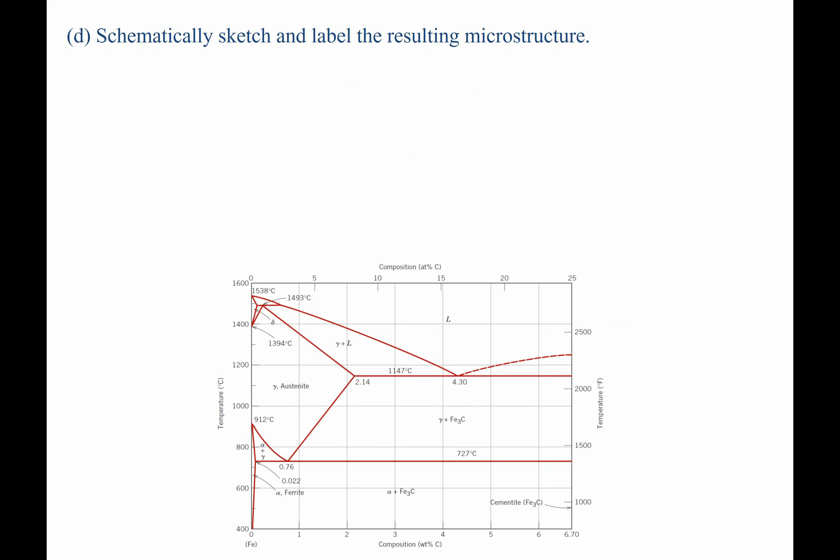For part D, it then asks us to sketch and label the resulting microstructure. Well, we started out here in the austenite regime somewhere. We're going to cool it down eventually to this point. So the first thing it's going to start with is a structure that has just grains of the austenite phase. So these are all austenite. They're all at the same composition of C0.